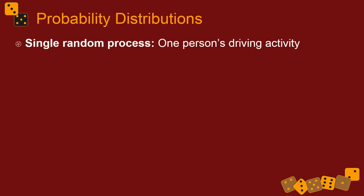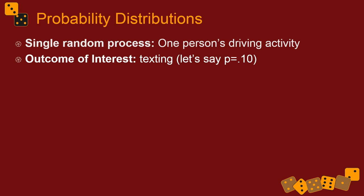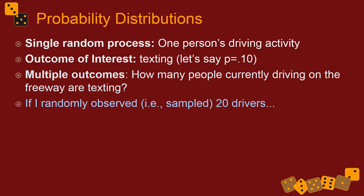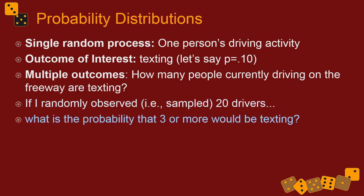Here's another example. Let's think of the single random process of one person's driving activity, and the outcome of interest is whether they're texting at any given point. Let's say we have data saying 10% of drivers are texting — I chose that number; it's actually probably much lower. Instead of asking what's the probability that one driver is texting, we ask: if we randomly observe 20 drivers from the side of the highway, what's the probability that three or more of them might be texting?